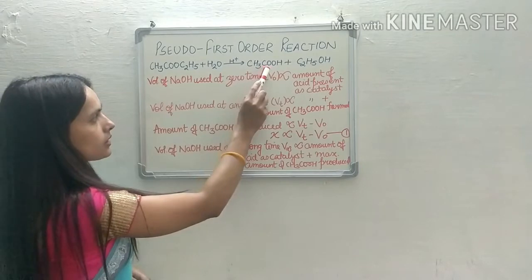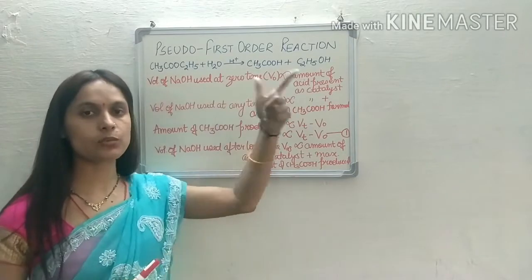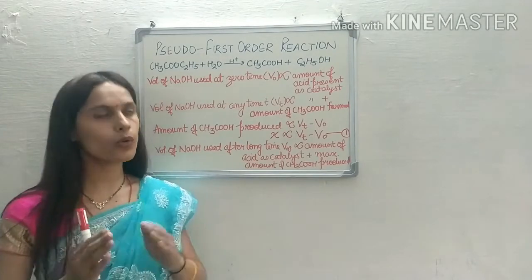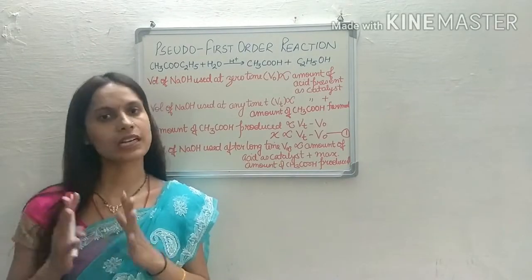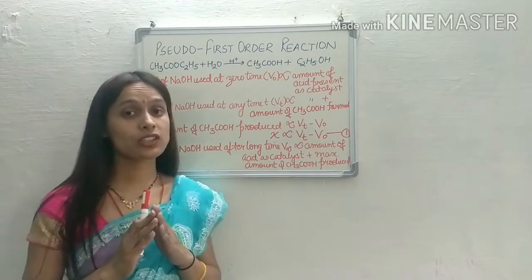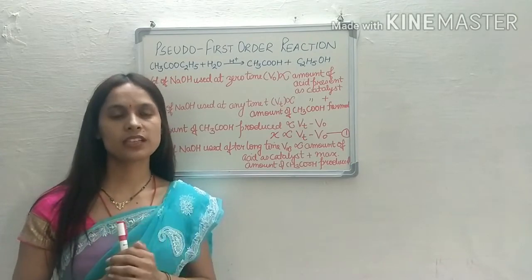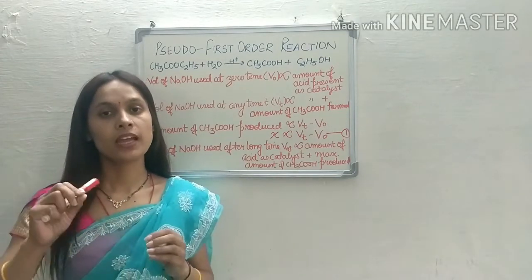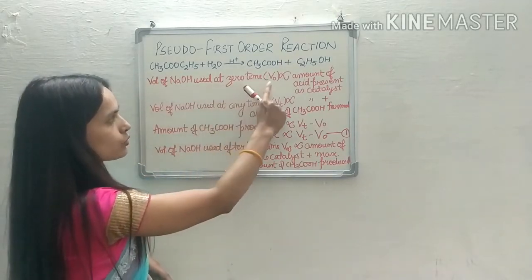The volume of NaOH used is recorded at different times. Since the reaction proceeds in acidic medium with acid as a catalyst, NaOH first reacts with that catalyst acid. The volume of NaOH used at zero time — before the reaction starts — is called V0, and it is directly proportional to the amount of acid present as a catalyst.